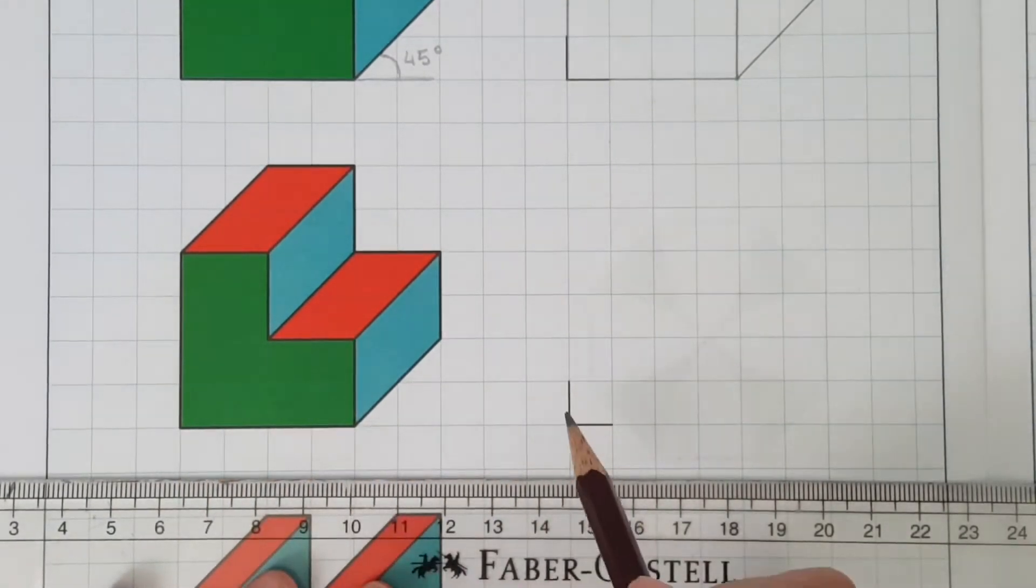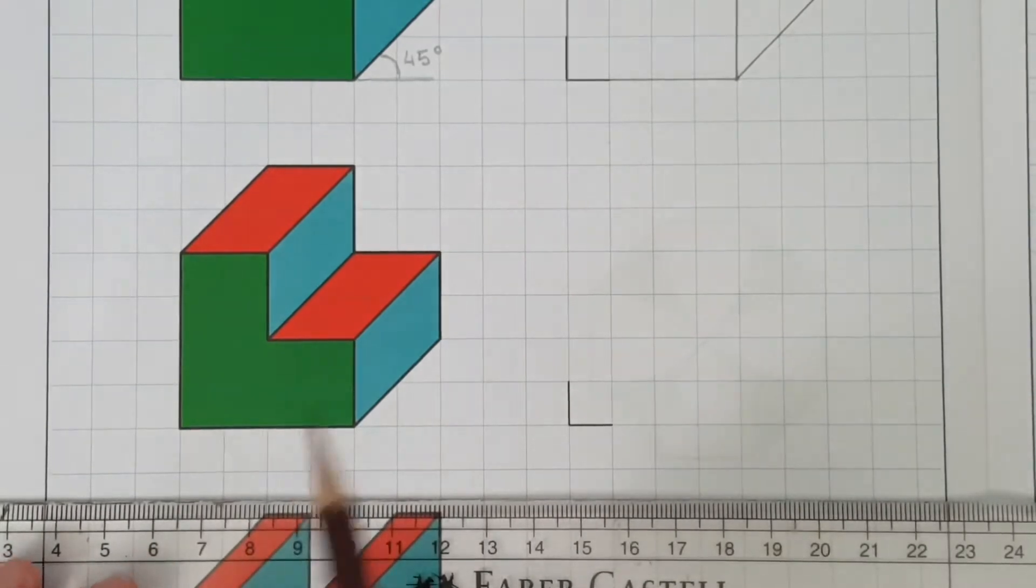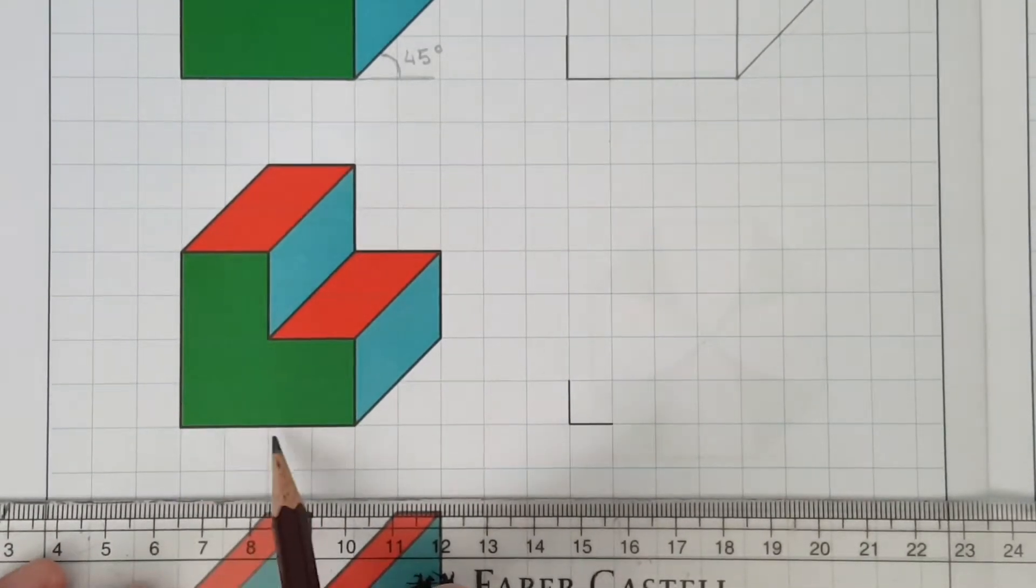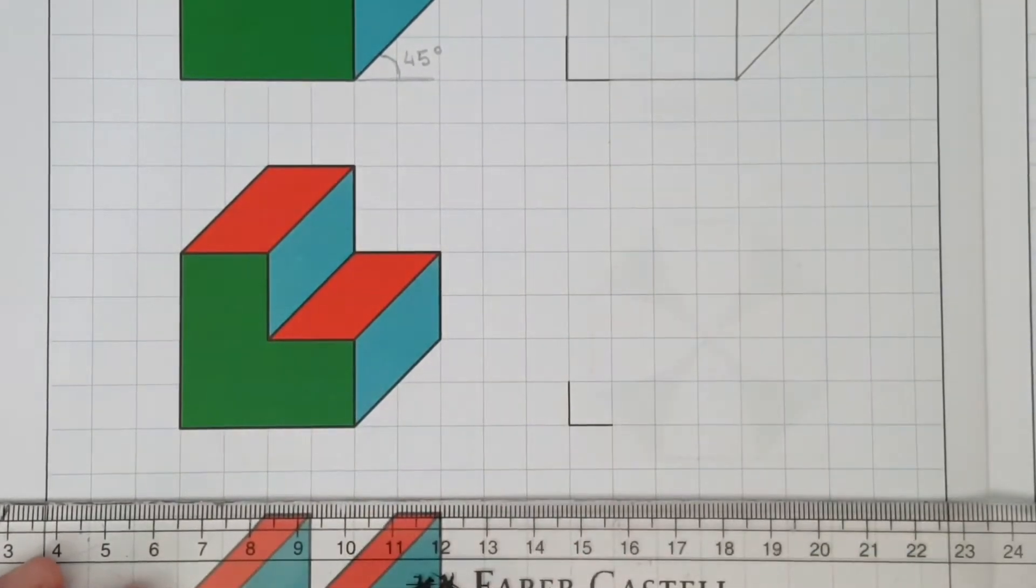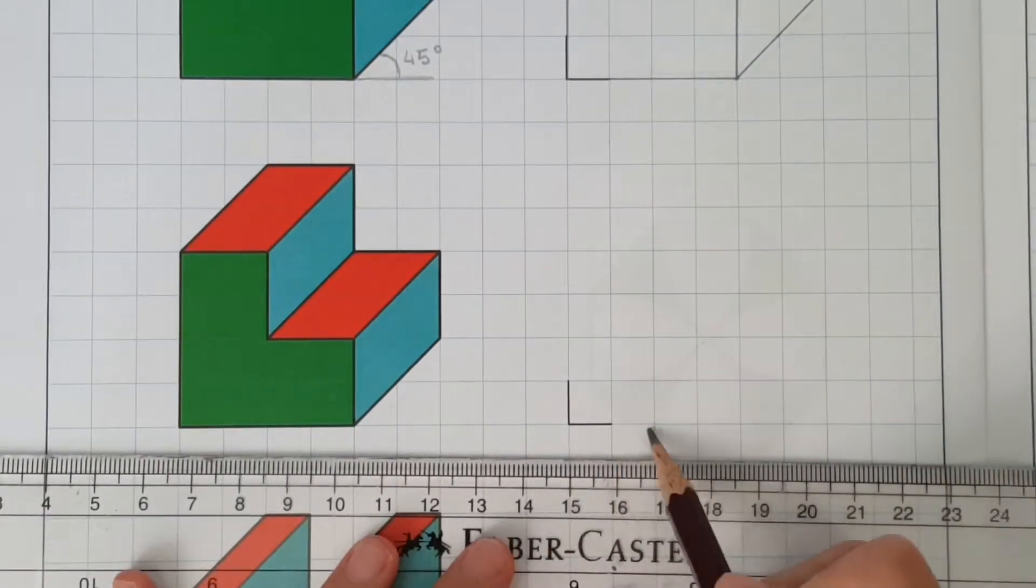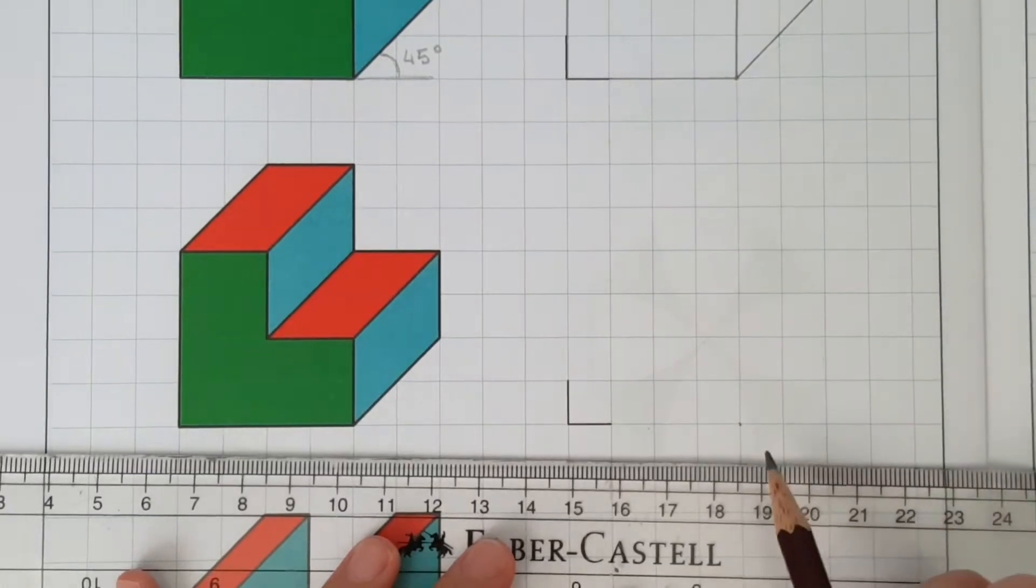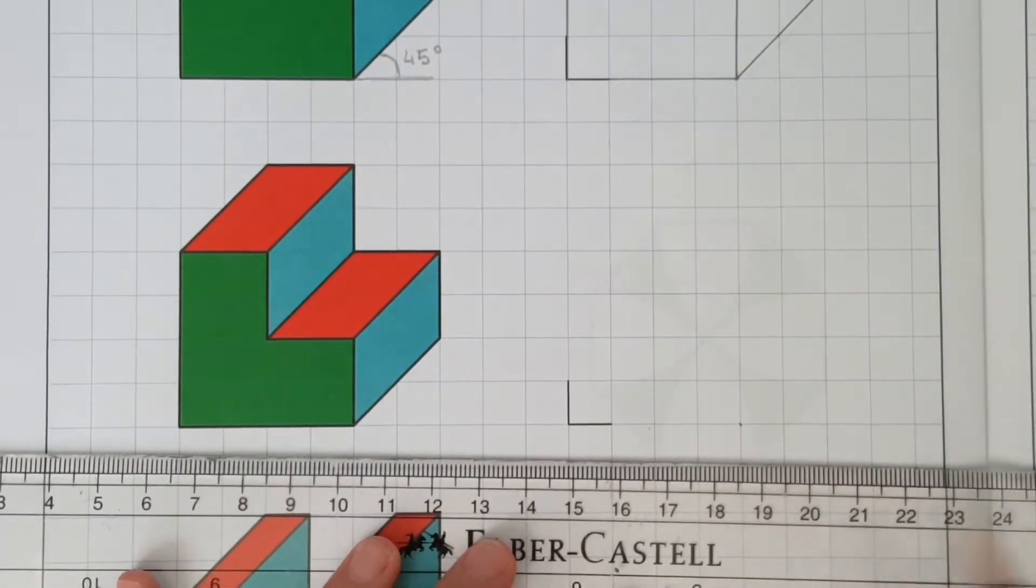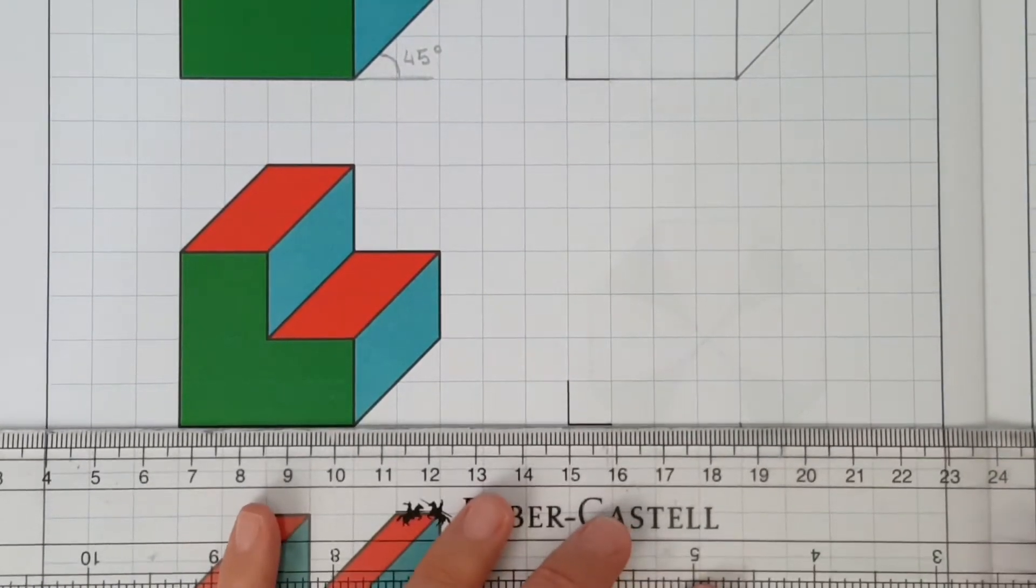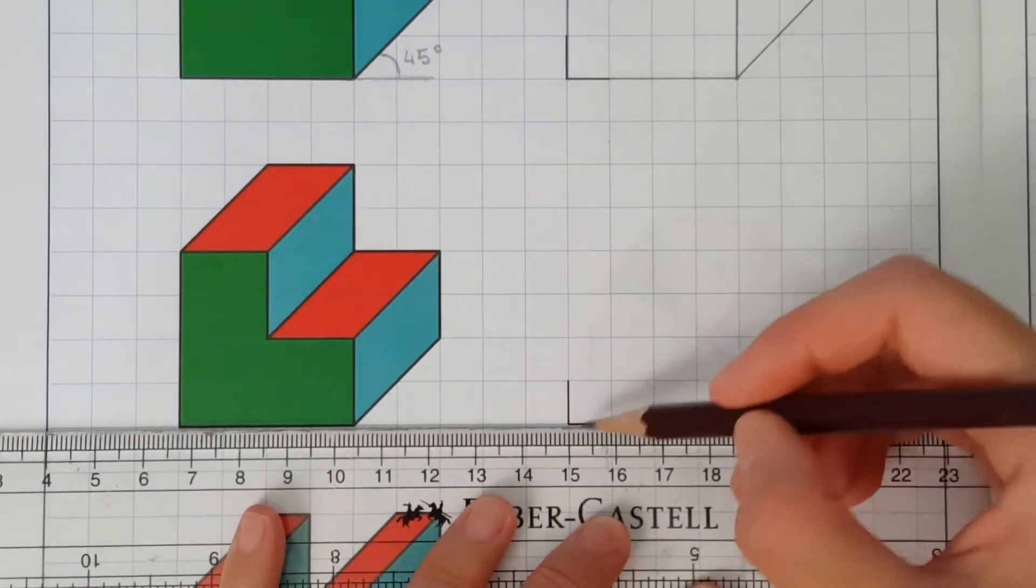And we're going to start by drawing the baseline. The baseline here is 1, 2, 3, 4, 4 squares to the right. So count your squares, mark a dot if you find that helpful, and then draw your construction line.